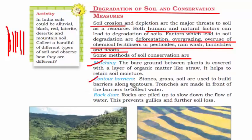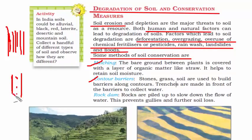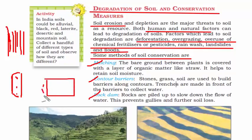The second method is contour barriers — making barriers of rock or soil around plants so that when you pour water, it stays in between the barriers. The third method is rock dams: piling rocks around the land to prevent gully formation, because through those gullies water escapes, carrying soil with it. Rock dams prevent soil from moving.